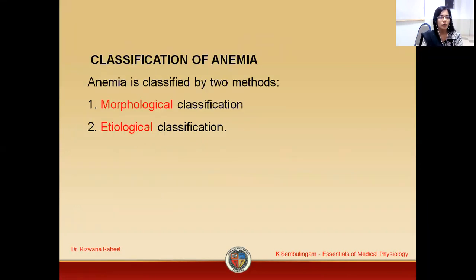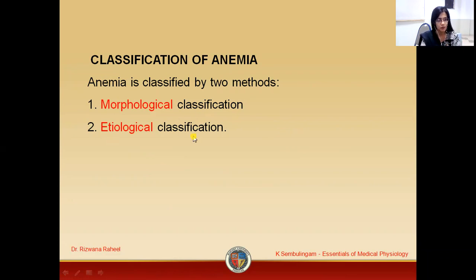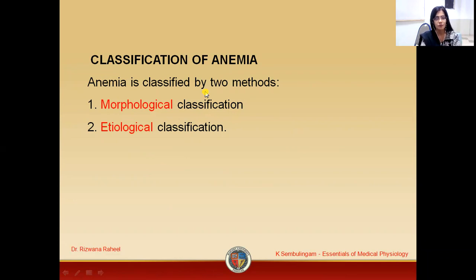Anemia is classified into two main categories. According to their morphology we have one classification of anemia, and according to etiology we have a different classification of anemia. This was all about what anemia actually is and what are the two main categories on the basis of which we classify anemia.